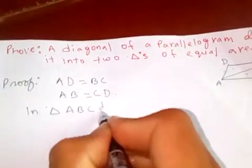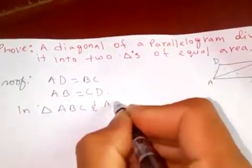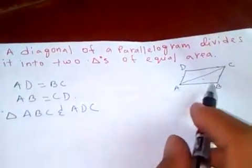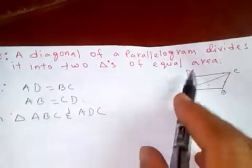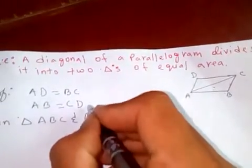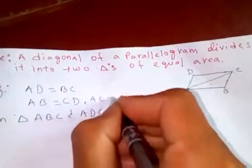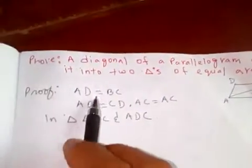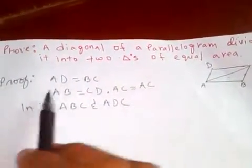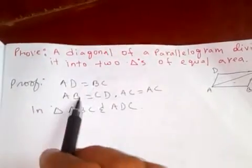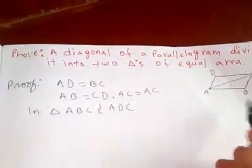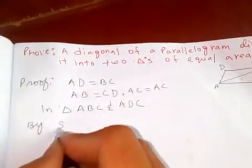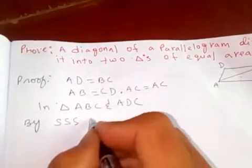triangle ABC and triangle ADC, we have AB equals CD, BC equals AD, and AC equals AC because AC is common to both triangles. So since all these are sides - side, side, side - by SSS (side-side-side congruence),